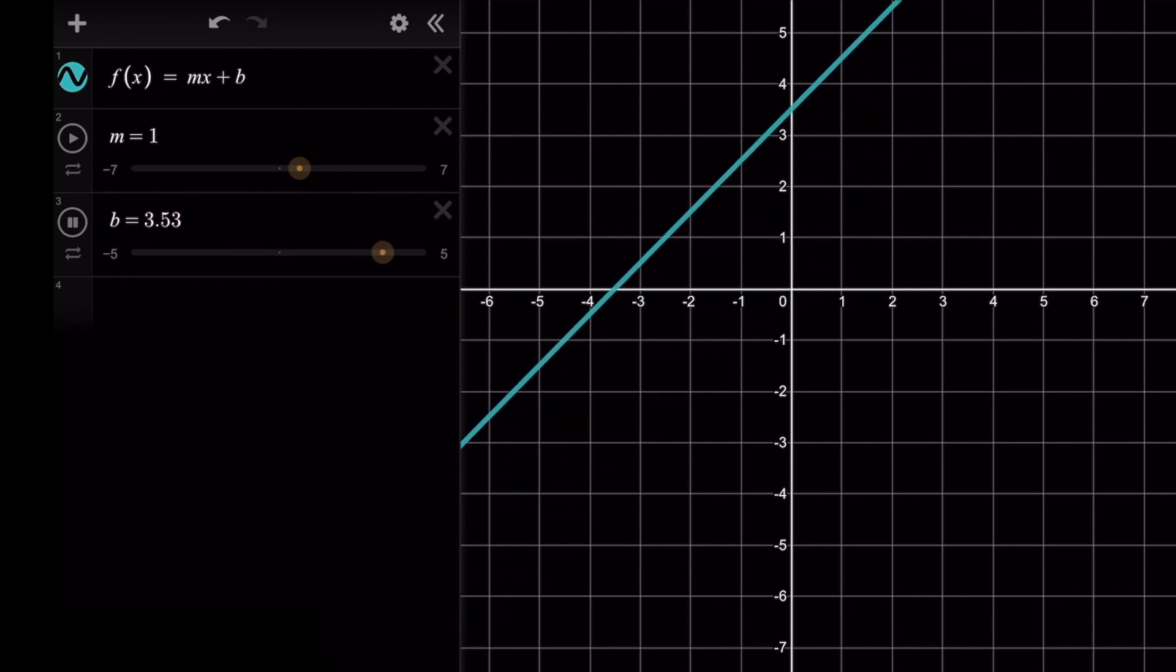So for our b values, this is our vertical intercept, which is where the line crosses the vertical axis. So intercept basically means intersect. And so we're looking at where the line intersects that y or vertical axis.